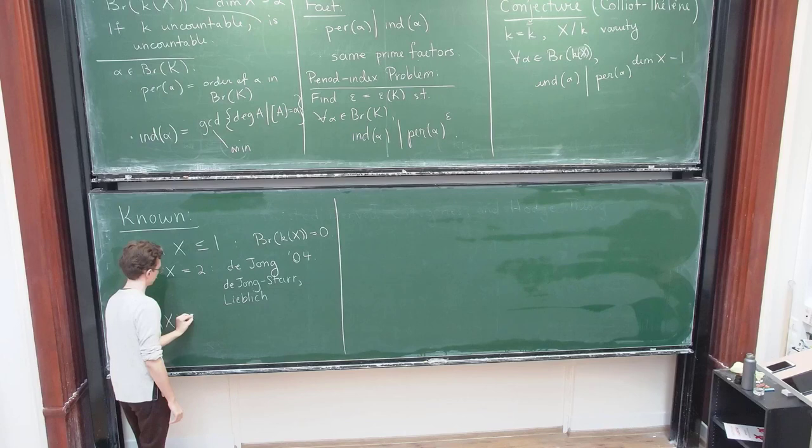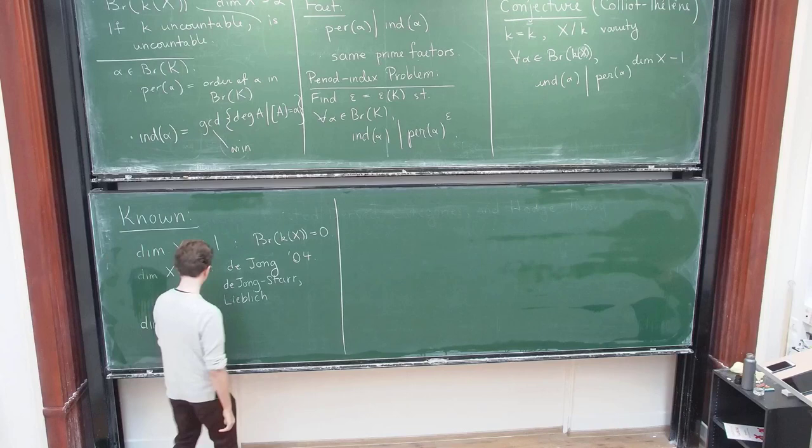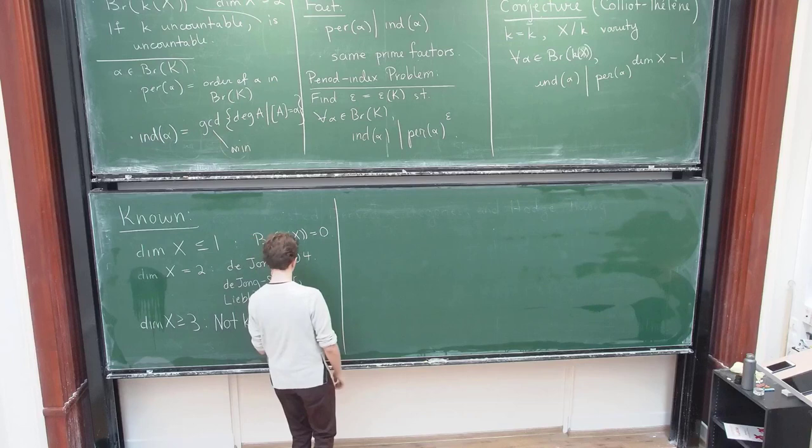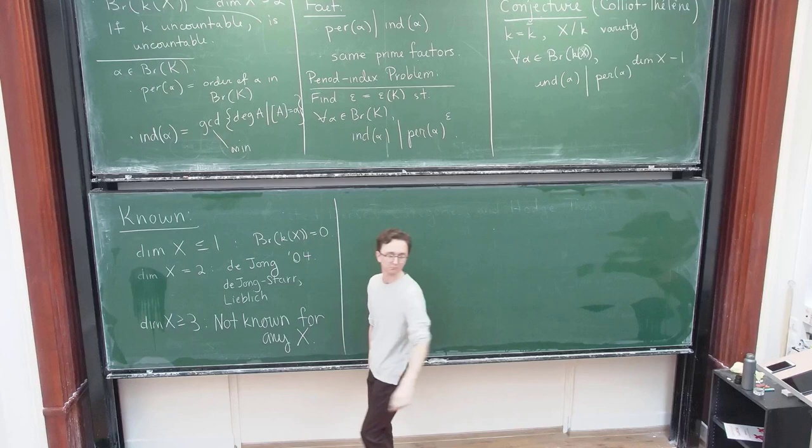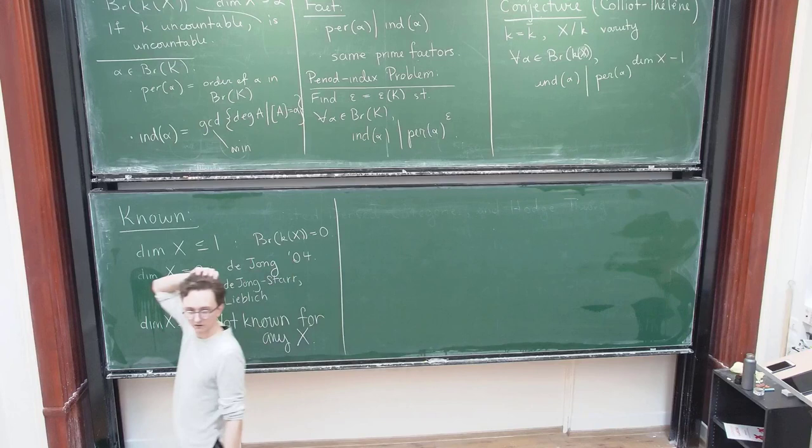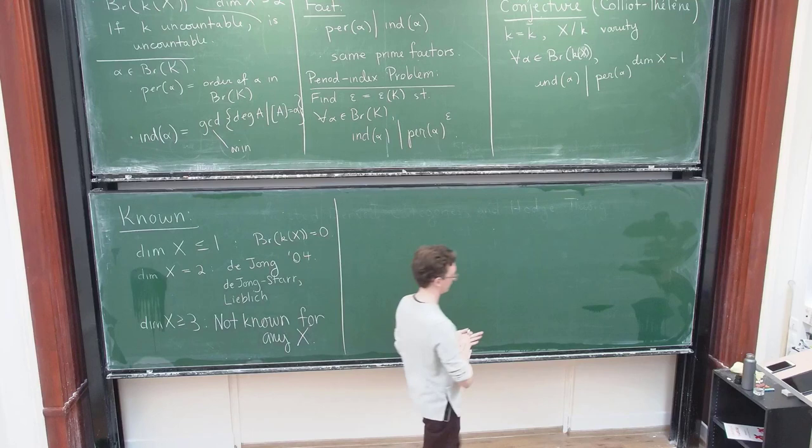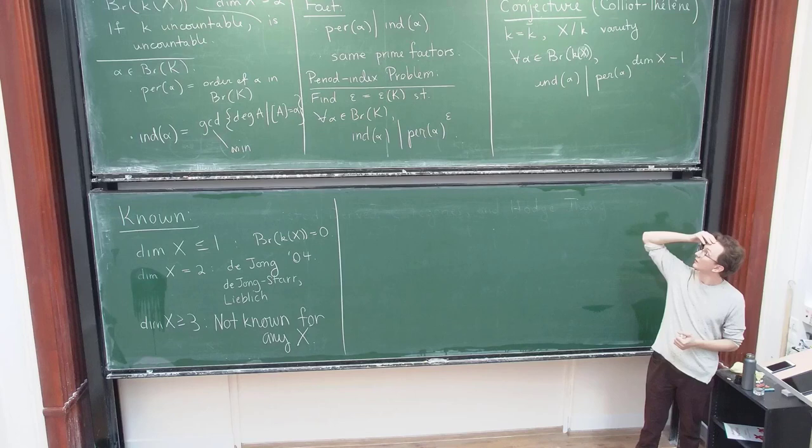And then if the dimension is at least three, it's not known for any X. There is no field of transcendence degree at least three where we have a bound like this, really any bound at all on the whole Brouwer group. So there's a huge barrier. So this is the picture.